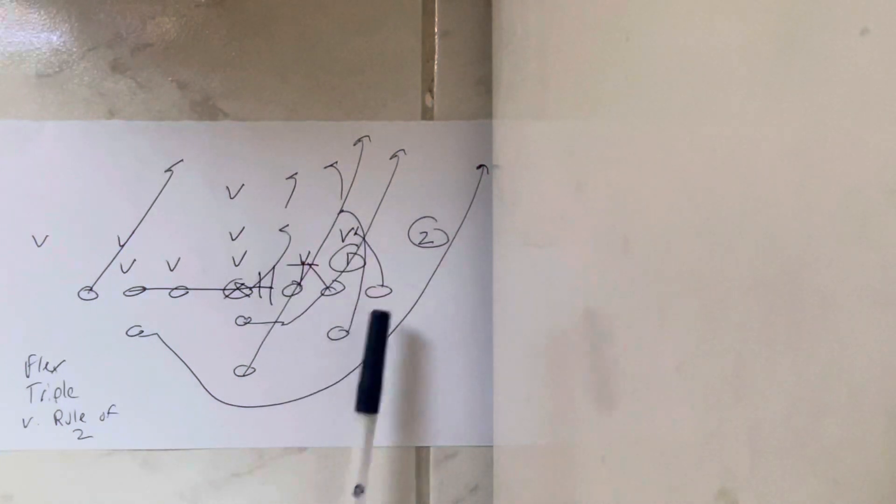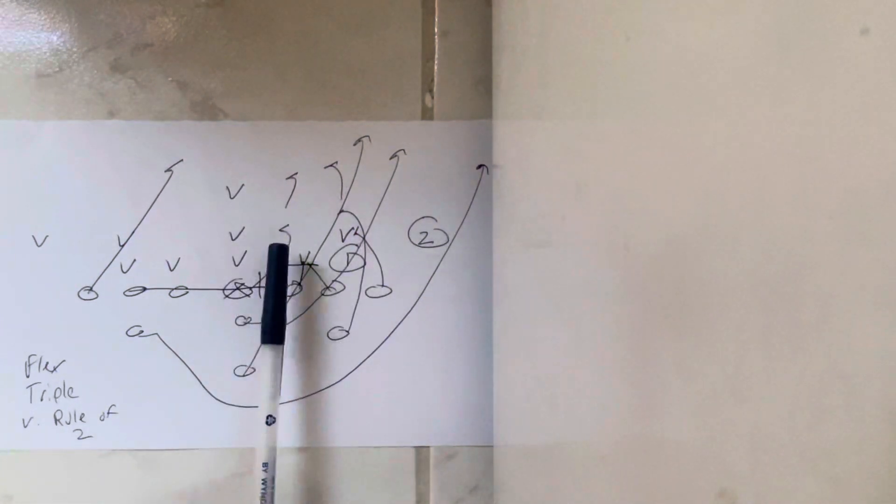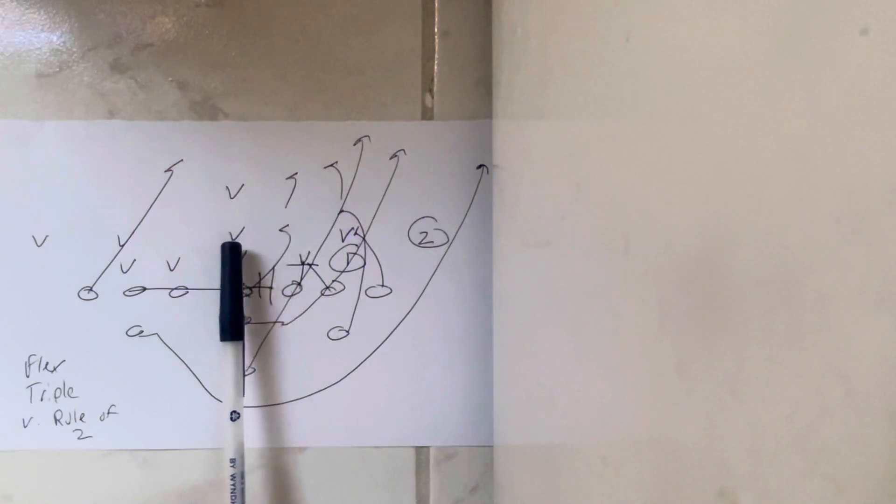So basically, the receiver, the A-back, and the center have the two backers to the safety. So the center's going to veer play side, and if he stays in his gap, he'll block the mic, otherwise he'll chase the safety.